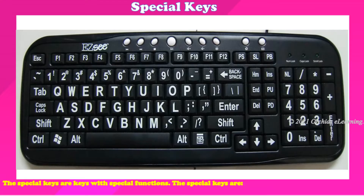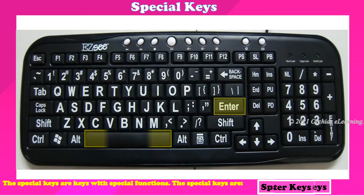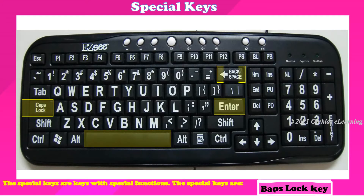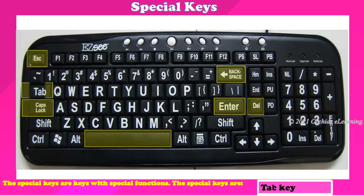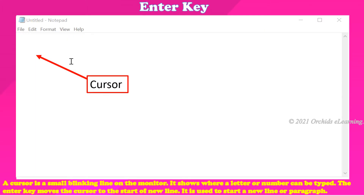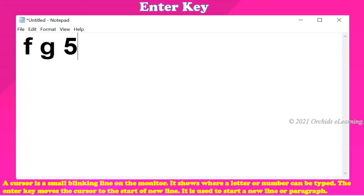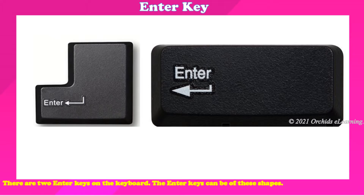The special keys are keys with special functions. The special keys are: Enter key, Spacebar key, Caps Lock key, Backspace key, Delete key, Escape key, Tab key, and Num Lock key. A cursor is a small blinking line on the monitor — it shows where a letter or number can be typed. The Enter key moves the cursor to the start of a new line. It is used to start a new line or paragraph, and there are two Enter keys on the keyboard.